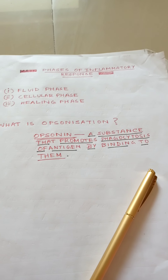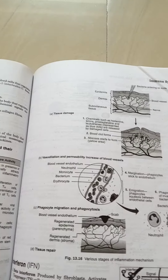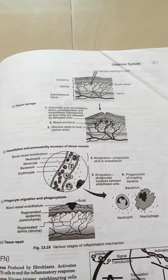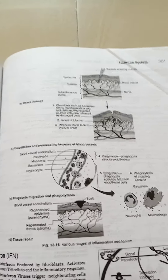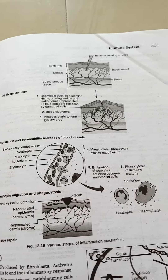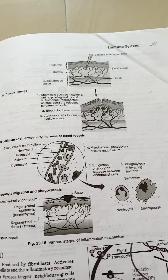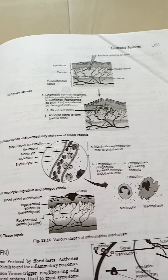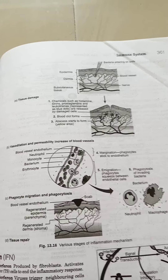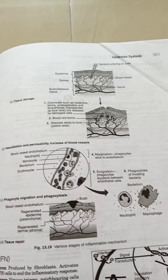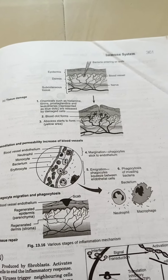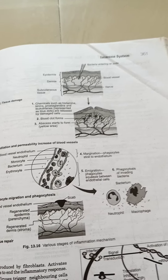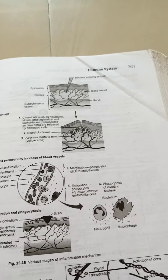In the fluid phase, chemical mediators play a central role. Bradykinin, produced in the kidney, causes pain and vasodilation. Histamine is released by mast cells and affects vasodilation and smooth muscle contraction. Prostaglandin, a lipid, is released by somatic and mast cells and causes vasodilation.